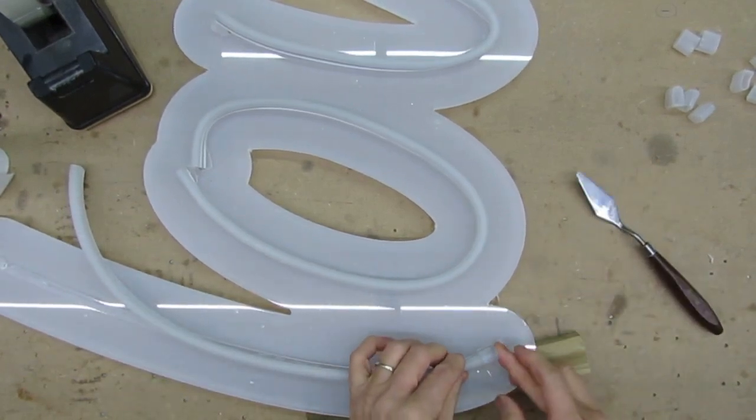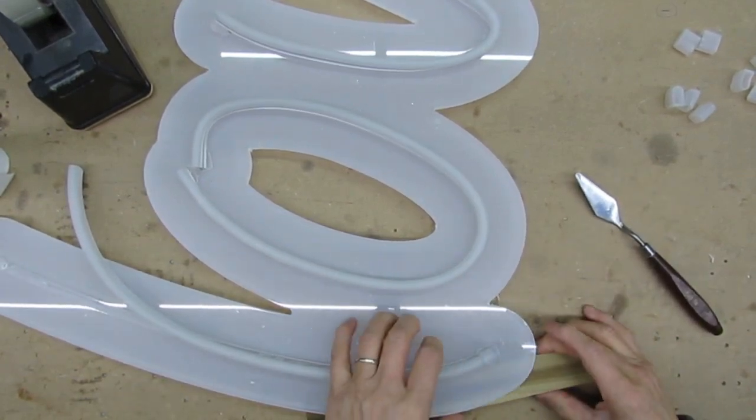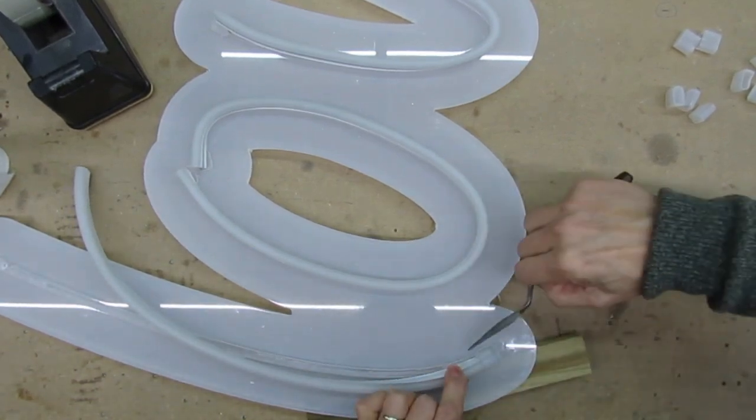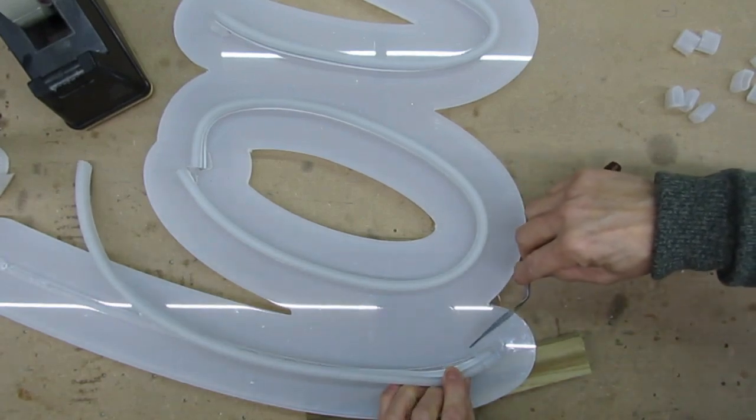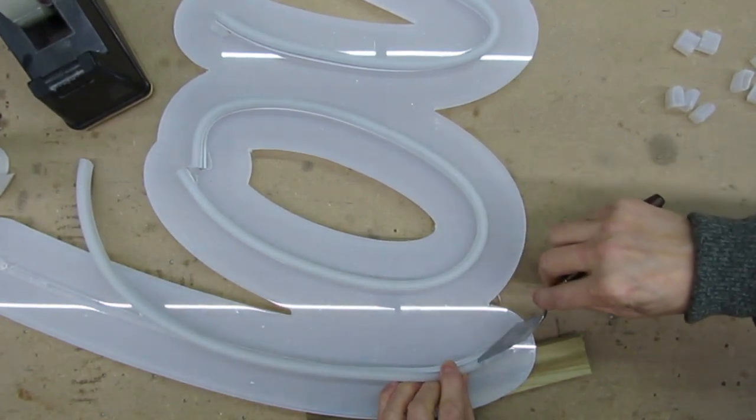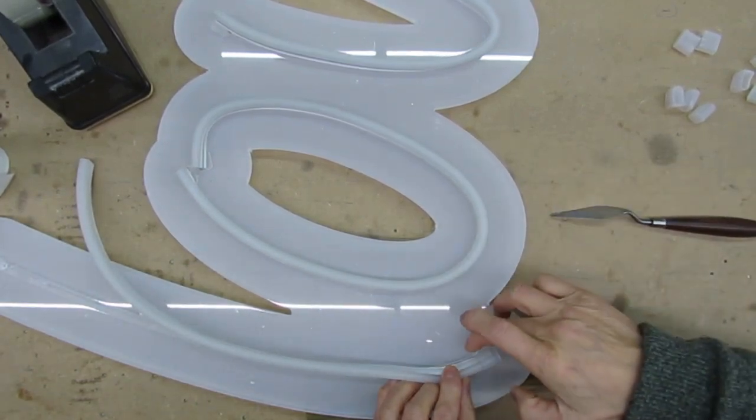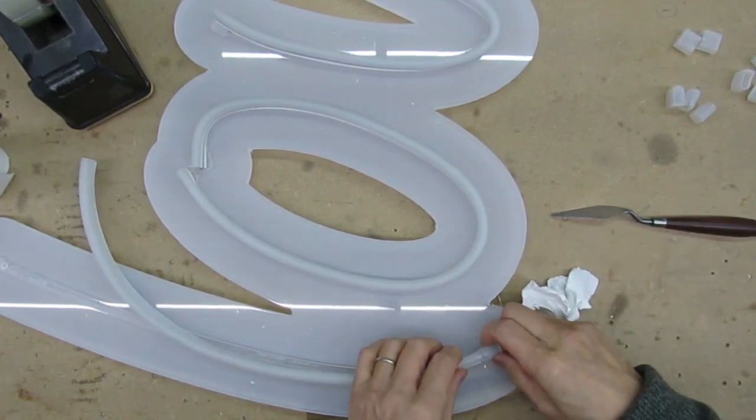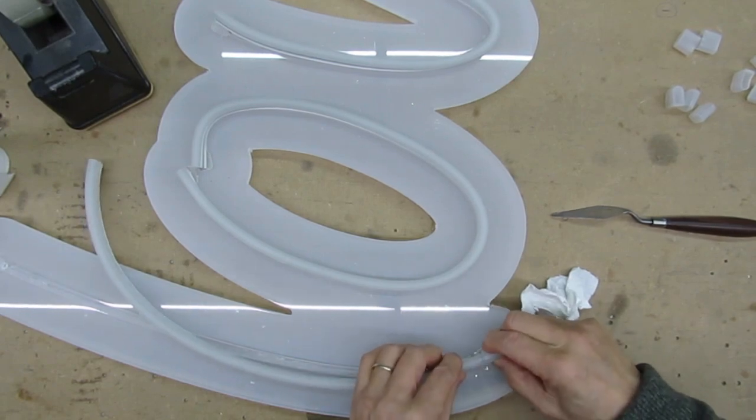Make sure the end cap is filled with silicone and leave no gaps otherwise water may get inside. You'll see I'm making an extra effort to ensure there is no chance water will get inside the neon. The LED strip inside is not waterproof, so the last thing you want is a few weeks after installation for one section to fail due to water ingress.